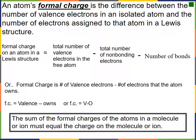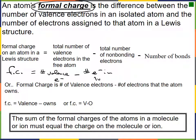A tool we use to assess Lewis structures is formal charge, abbreviated FC. Formal charge equals the number of valence electrons the atom brings in (determined by its group) minus the number of non-bonding electrons in lone pairs, minus the number of bonds on that atom. Equivalently, formal charge equals valence electrons minus the number of electrons the atom owns in the structure.